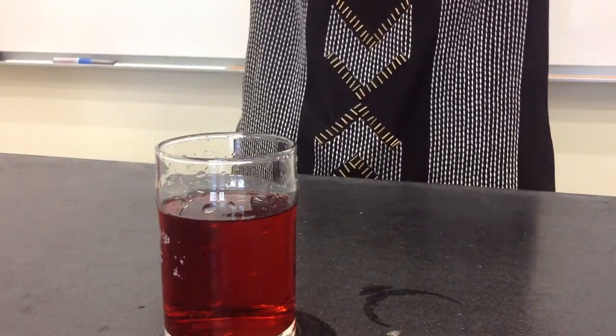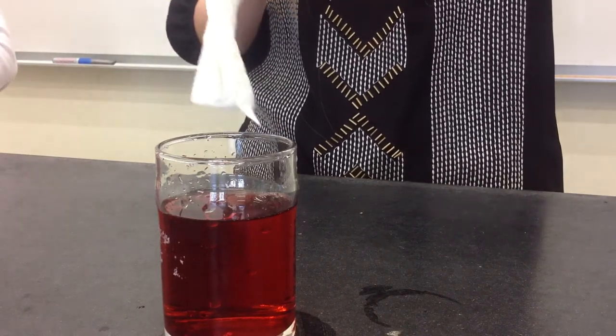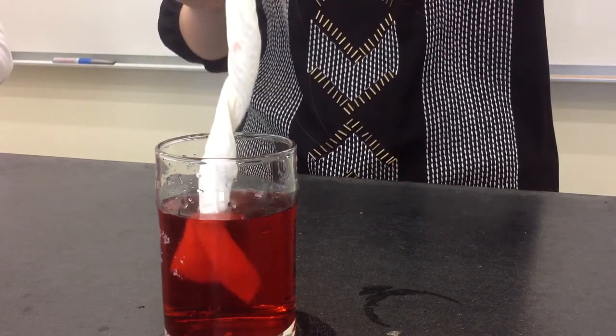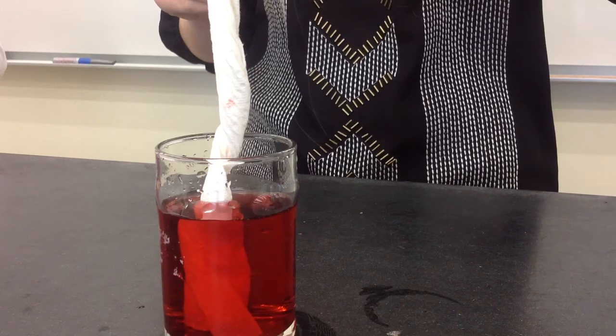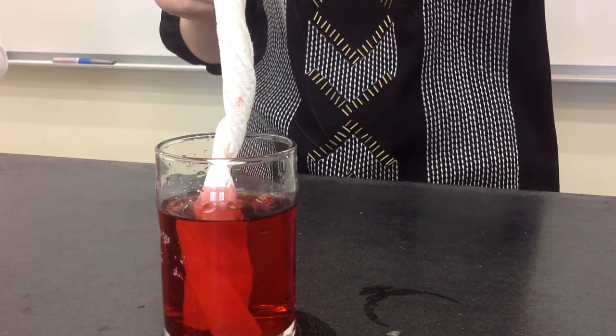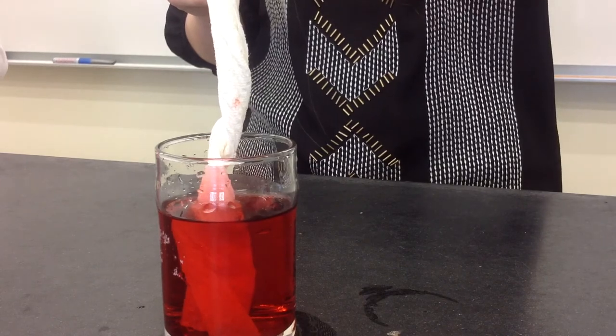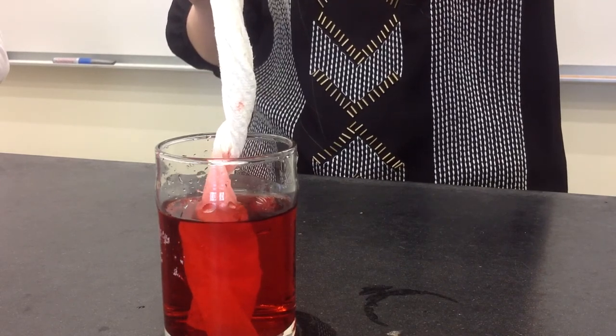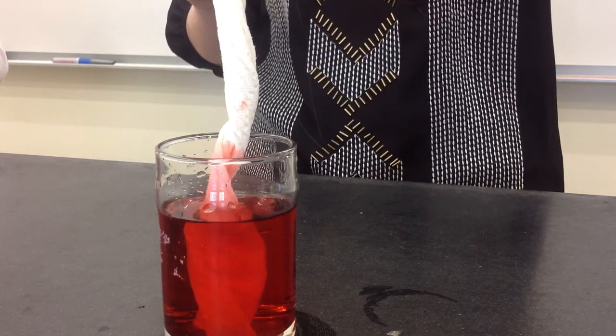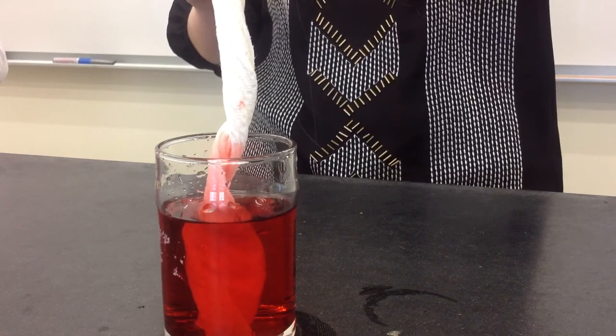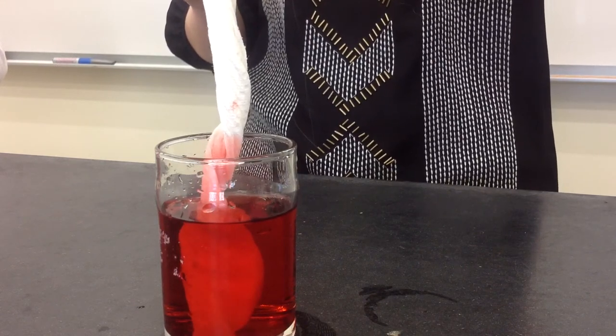Water is a polar molecule, and the paper towel has cellulose, which is also a polar molecule. As you can see, the red colored water is climbing up the paper towel due to a property called adhesion. It'll eventually stop when gravity takes effect.